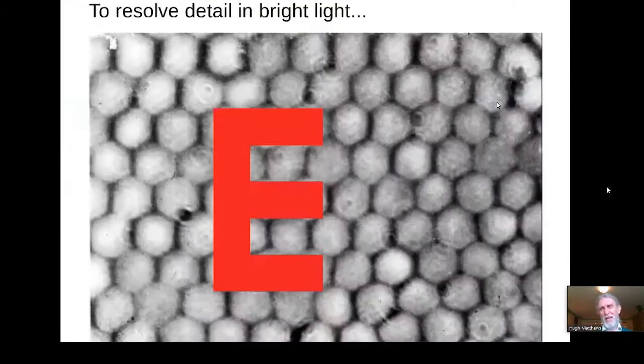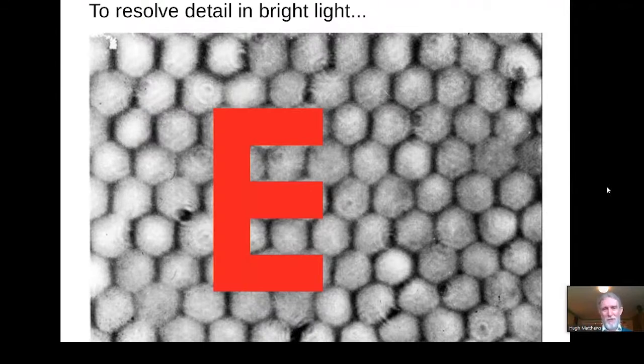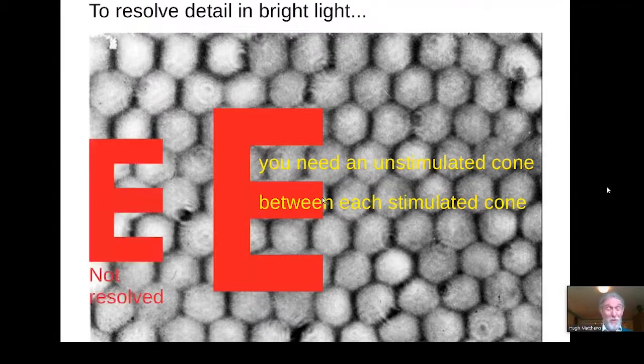So why does the high cone density in the fovea matter? Well, to resolve detail in bright light, we've got to be able to see the difference between parts of the image that stimulate cones and parts of the image that don't. So to see this letter E, we would need an unstimulated cone in between each stimulated cone so that we could see the dark gap between the two red prongs. If the E were smaller, we wouldn't be able to see that it was a letter E because we wouldn't actually reliably see the gaps. We'd simply see a blurry red blob. This would not be resolved. So to resolve fine detail, we need to point the very tightly packed cones of the human fovea at that point of interest on the object. And we also have to have bright enough light that the cones can function.